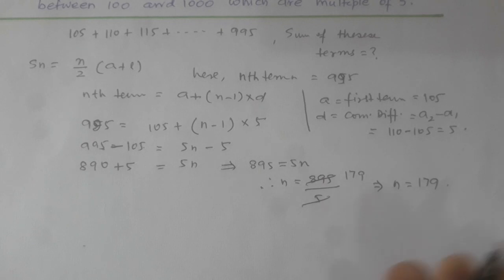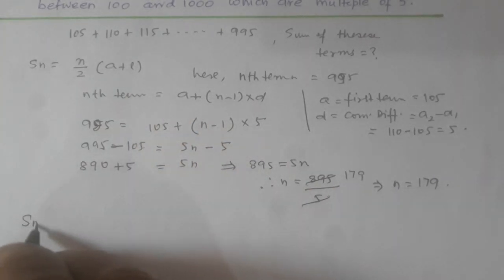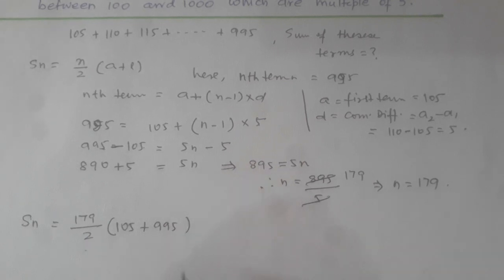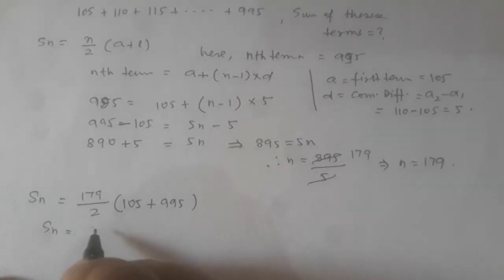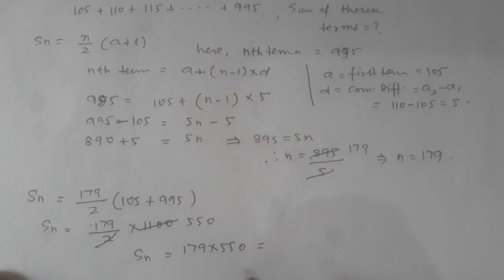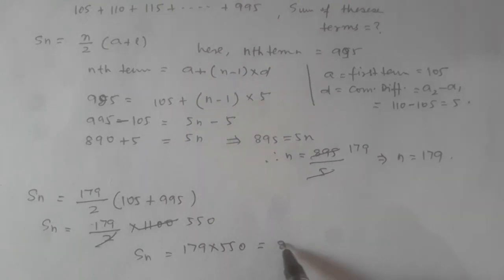Now we put n equals 179 in the sum formula. Sn equals 179 by 2 times (105 plus 995). This equals 179 by 2 times 1100, which simplifies to 179 times 550, giving us 98450.